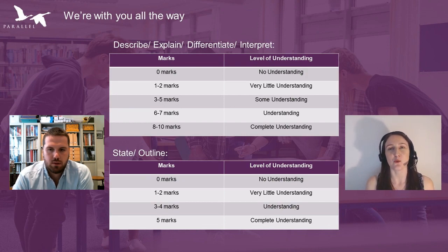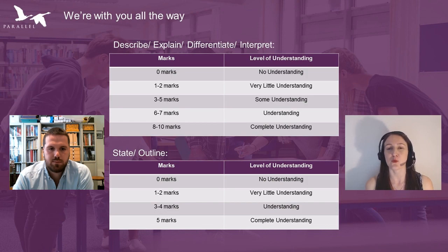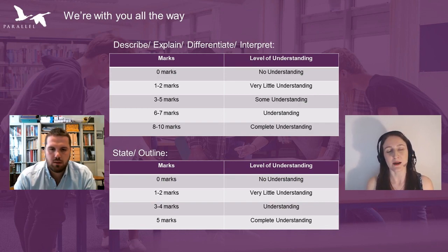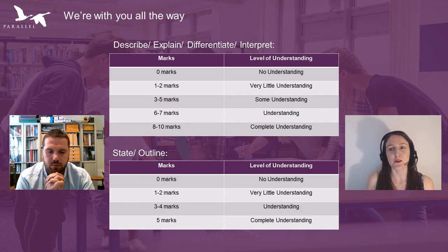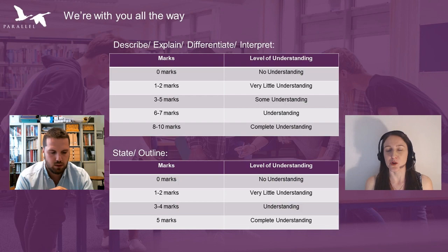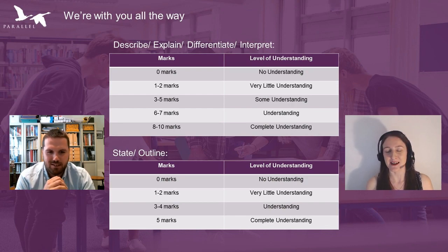Each question is split into two parts. Part A will be 20 marks — they'll probably ask for two things, for example 'explain two differences between a matrix and a project organization,' and for each difference they give up to 10 marks. For a state or outline question — say 'state four sources of conflict' — those are worth 5 marks each. So you could have two incorrect and two correct answers and still get some marks. It's not completely right or wrong across the exam.